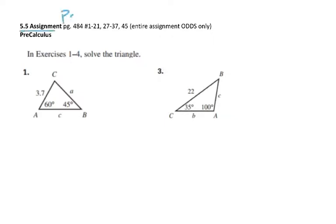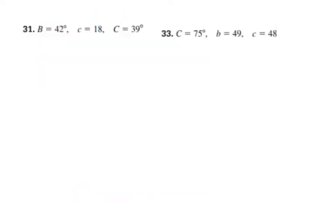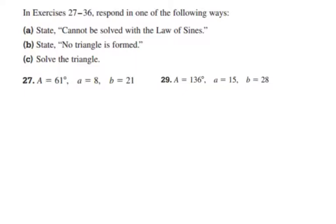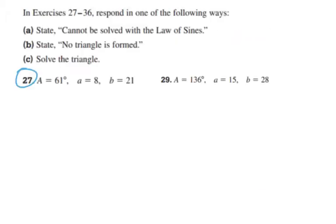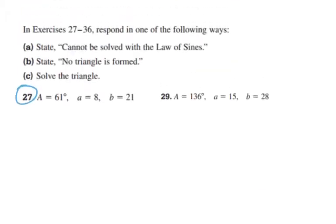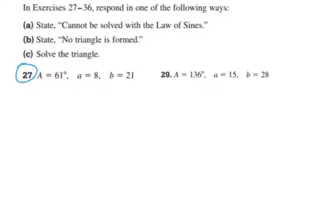Alright, so this is part 2 of the 5.5 assignment because we ran out of time there. Going to number 27 is where I left off. We're going to respond in the following ways to 27 and 29 and all the way through these next ones here. We're going to say either it cannot be solved with the law of sines, there's no triangle formed, or we're going to solve the triangle.